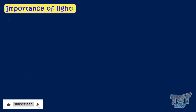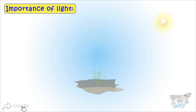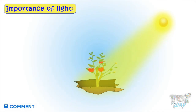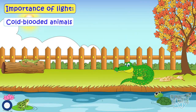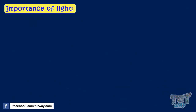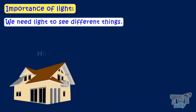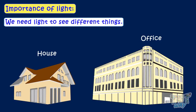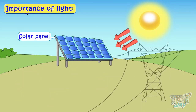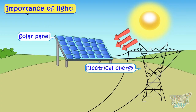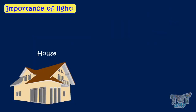Now let's learn about the uses or importance of light. All living things need light. Plants need light energy from the sun to grow and make their food using the process of photosynthesis. Many cold-blooded animals like reptiles, amphibians, and insects need light energy to keep their body warm. At some places, light energy from the sun or solar energy is converted to electrical energy and used to light up our homes.